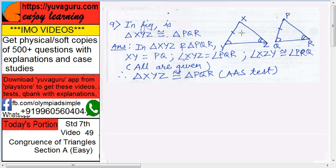So, let's see. In triangle XYZ and PQR, XY is equal to PQ, given. Now, where is it given? It is given in the figure, right?